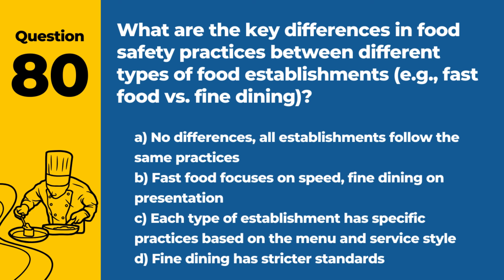Question 80. What are the key differences in food safety practices between different types of food establishments, e.g., fast food vs. fine dining? a. No differences; all establishments follow the same practices. b. Fast food focuses on speed, fine dining on presentation. c. Each type of establishment has specific practices based on the menu and service style. d. Fine dining has stricter standards. Answer c. Each type of establishment has specific practices based on the menu and service style. The key differences in food safety practices between different types of food establishments are based on their specific menu items, service style, and customer expectations, requiring tailored food safety approaches.